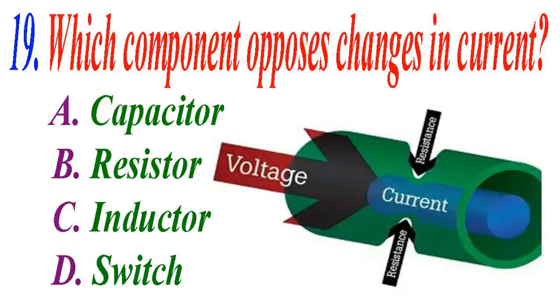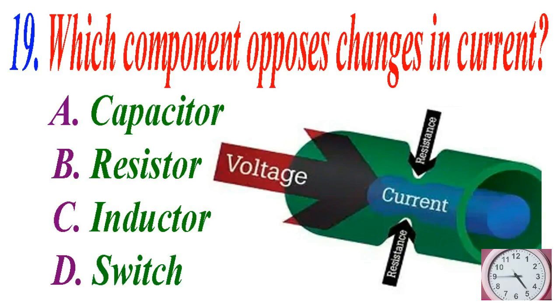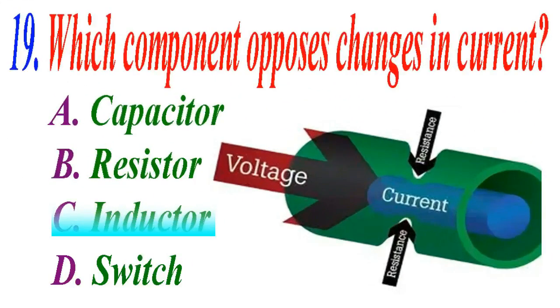Which component opposes changing current? A capacitor, B resistor, C inductor, D switch. The correct answer is C inductor.